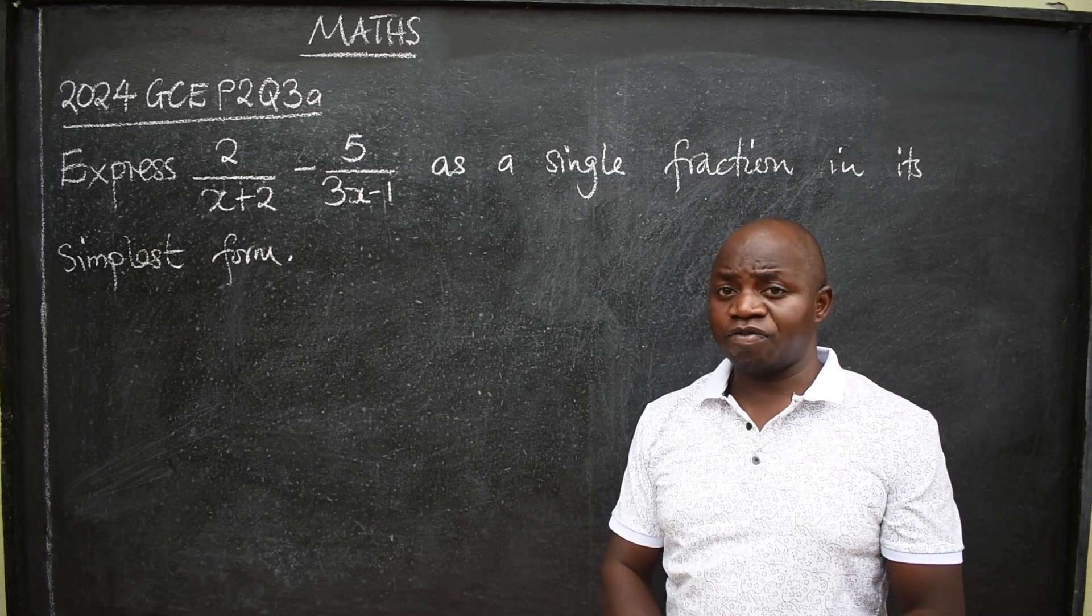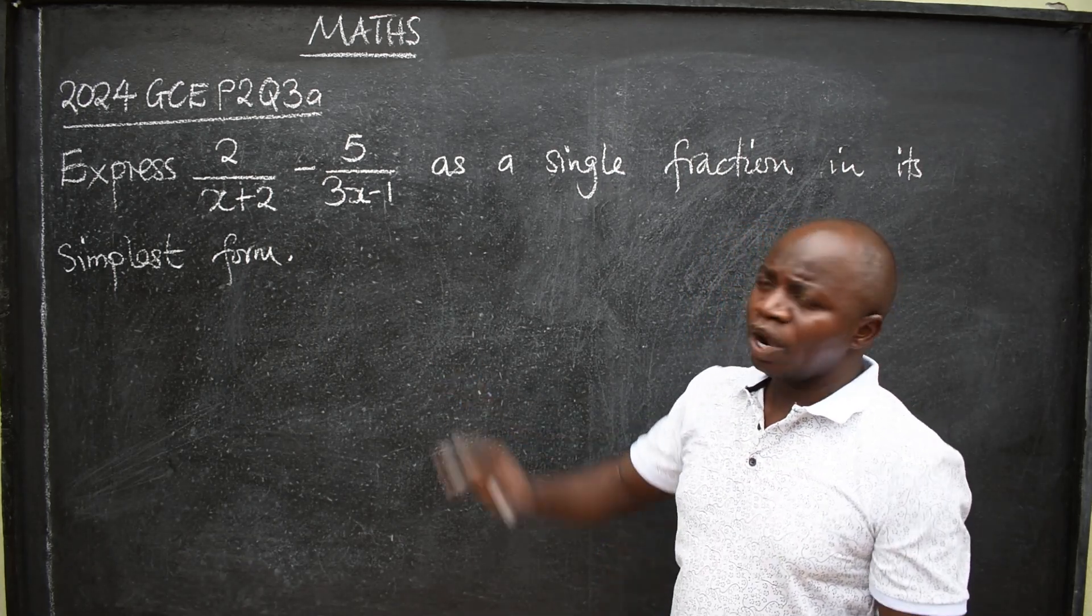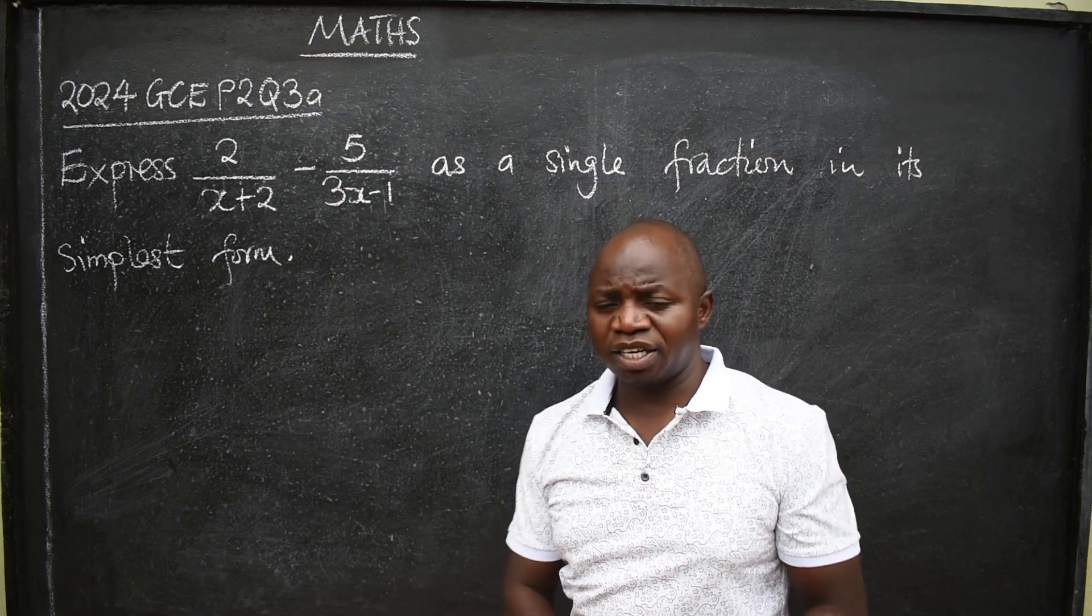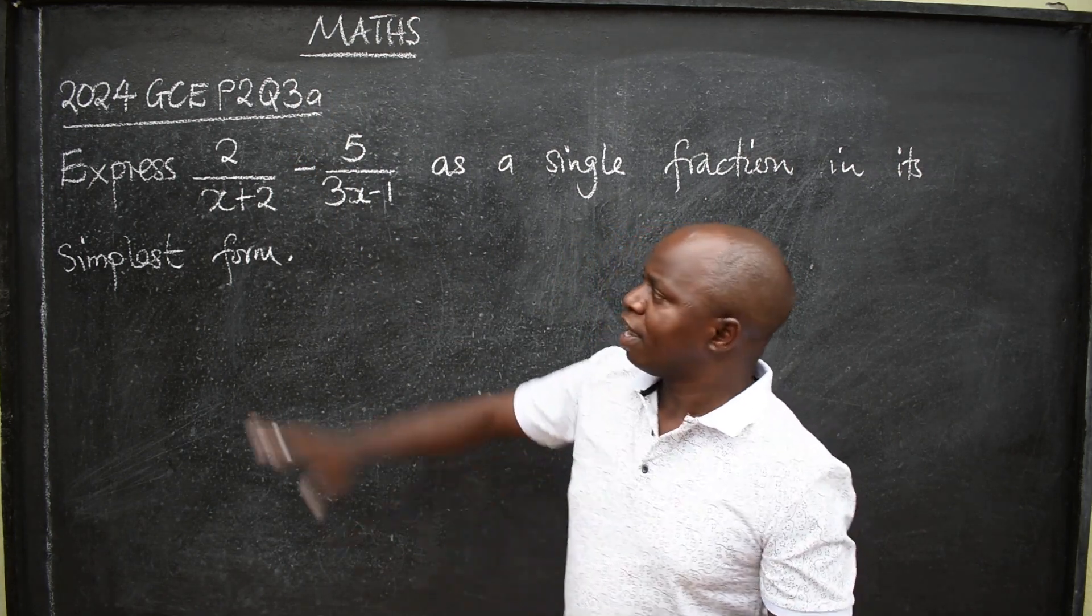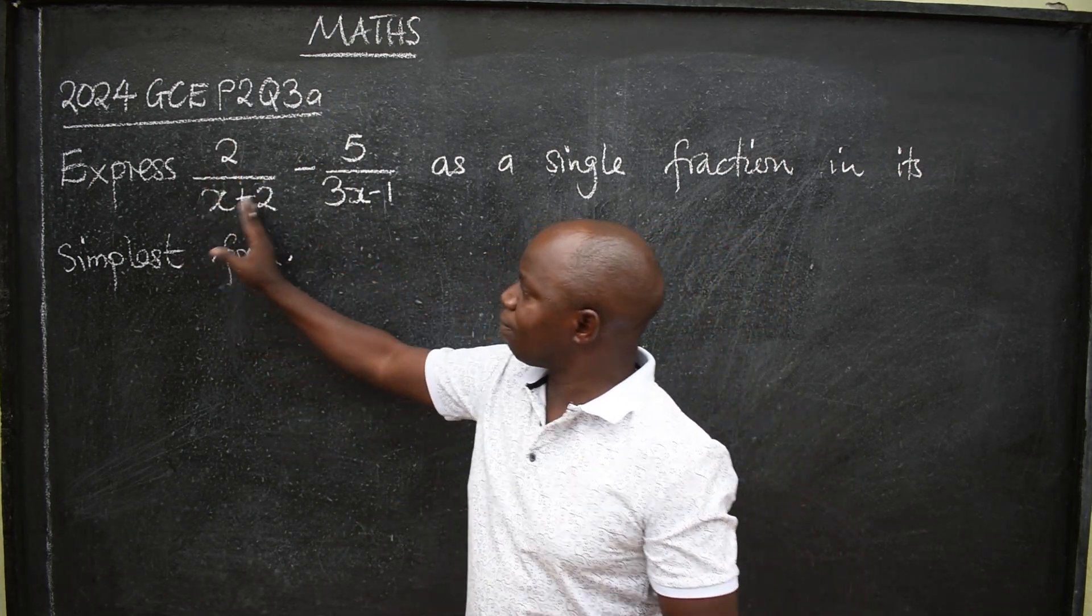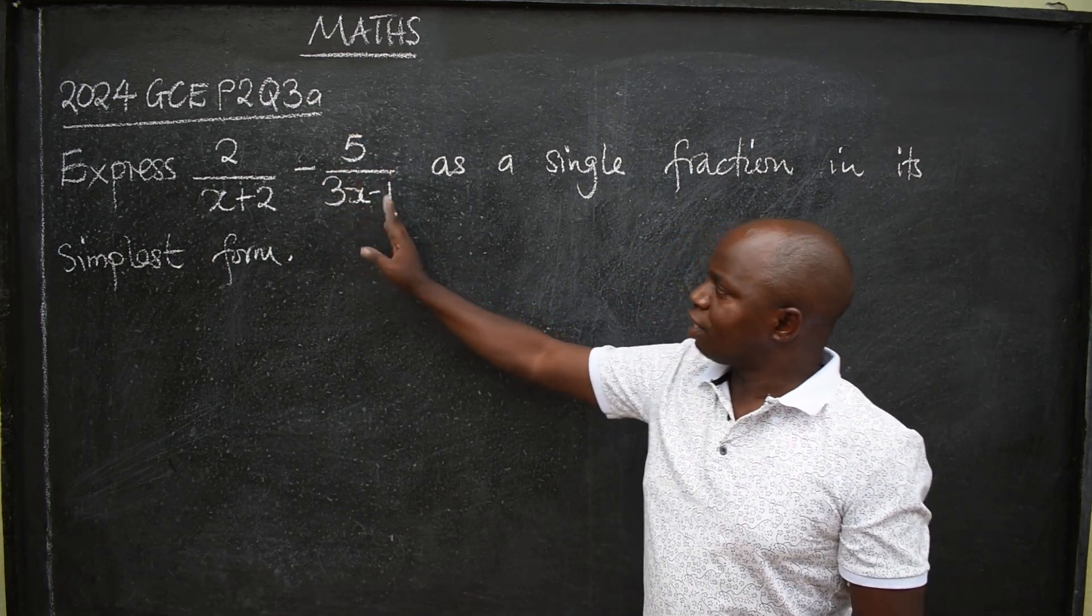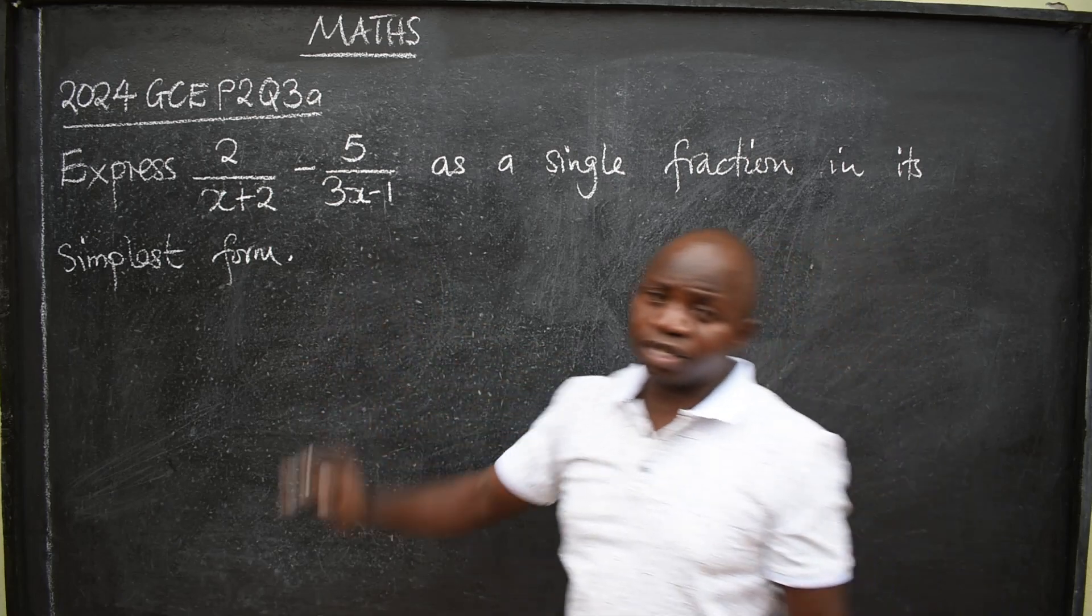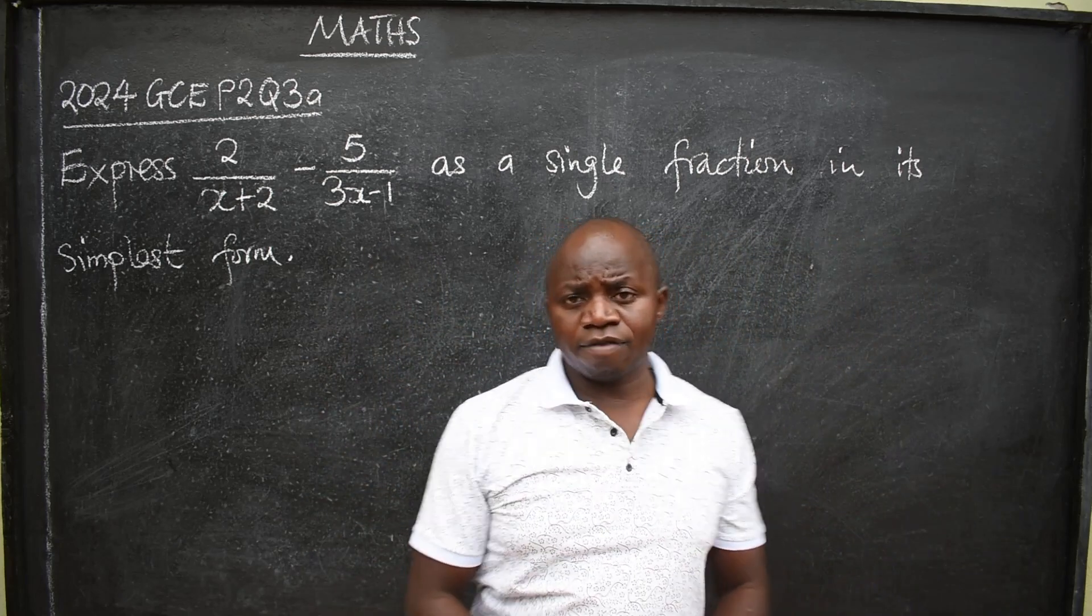The question is from 2024 GCE paper 2. This was question number 3A, section A. So, express 2 over x plus 2 minus 5 over 3x minus 1 as a single fraction in its lowest or simplest form.